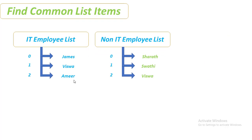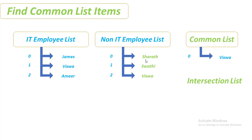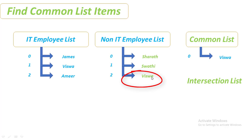Now we'll talk about find common list items. In the same way, I have list one (IT employee list) and list two (non-IT employee list). Using the find common list items action, we find values common to both lists. Since Vishwa appears in both the IT and non-IT employee lists, the output common list will be Vishwa. It is essentially an intersection of the two lists.